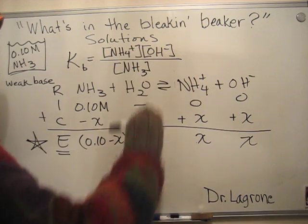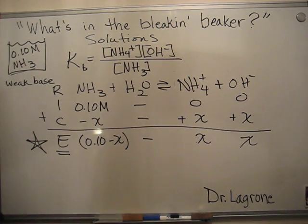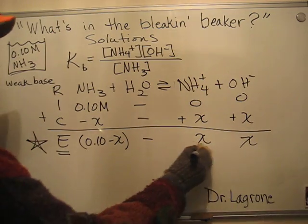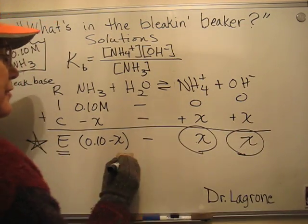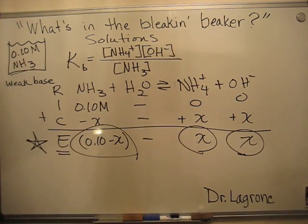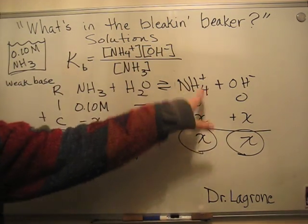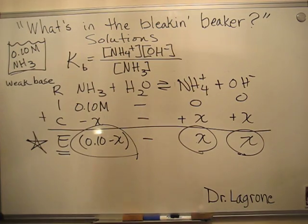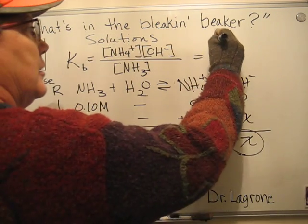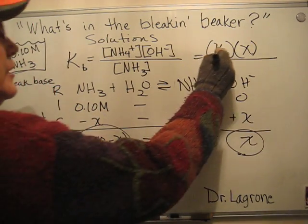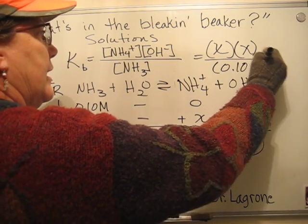I do not need to include water because we don't include pure liquids or pure solids in the reaction quotient. Now that I have my expression, I plug in the value of these concentrations at equilibrium. For ammonium ion and hydroxide, I'm going to plug in X for those, and for ammonia, 0.10 - X.